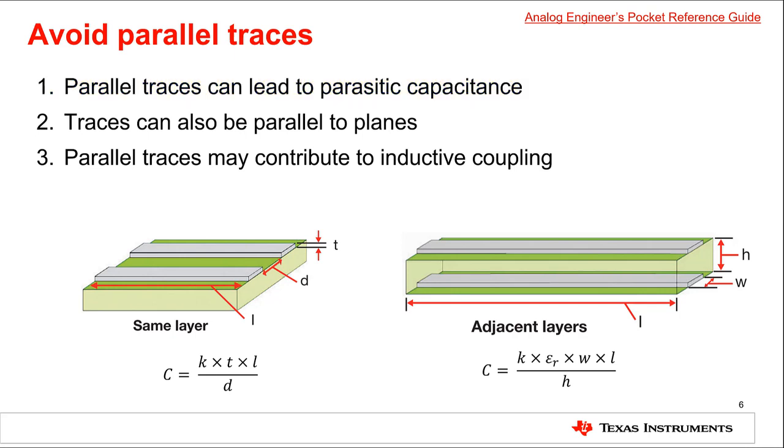For parallel traces on the same layer, the associated parasitic capacitance is given by the formula C equals KTL over D, where C is the total capacitance, K is the permittivity of free space, T and L are the thickness and length of the traces respectively, and D is the distance between the near edges of the traces.